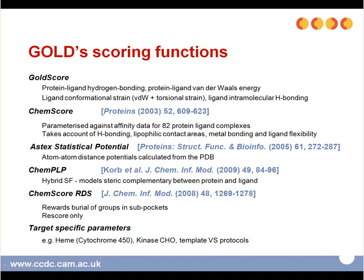The fourth scoring function available in GOLD is called ChemPLP. This is a hybrid scoring function containing a consensus score that combines elements of ChemScore and the PLP scoring function, which stands for Pairwise Linear Potential. This PLP scoring function models the steric complementarity between the protein and the ligand. Finally, ChemScoreRDS is a scoring function used only for rescoring — it rewards the burial of groups in subpockets.